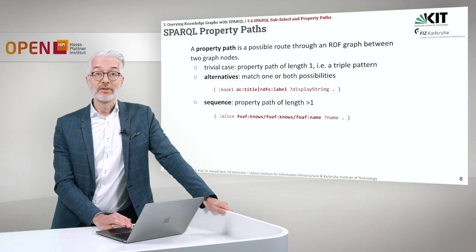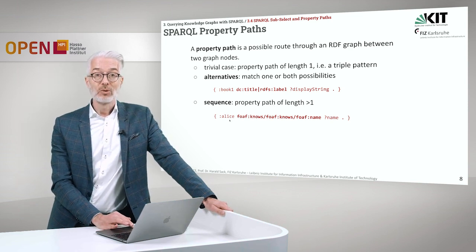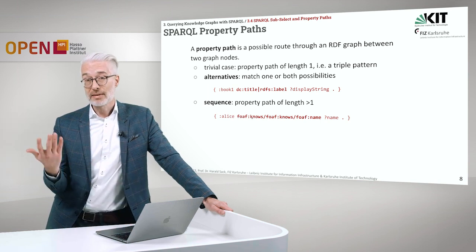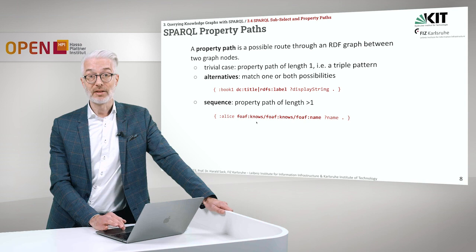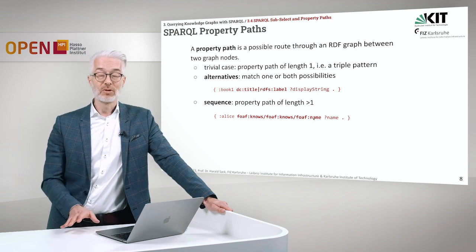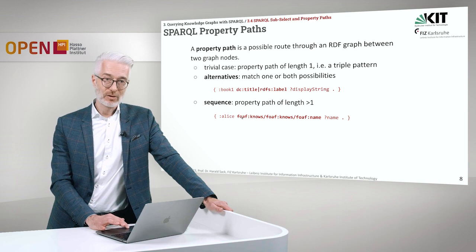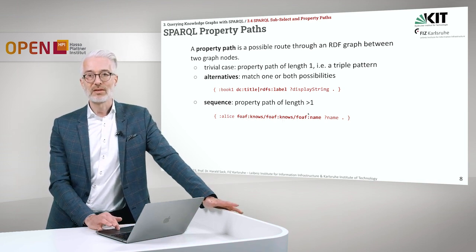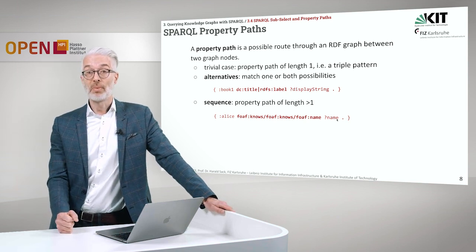Another possibility is a sequence, which uses property paths of length greater than 1. Like a file system path, properties are separated by a slash. For example, foaf:nose/foaf:nose/foaf:name means you follow property one, property two, property three, looking for a pattern of exactly this form: Alice connected by a path containing foaf:nose and foaf:name, returning the name. This is a property path sequence selectable via SPARQL.